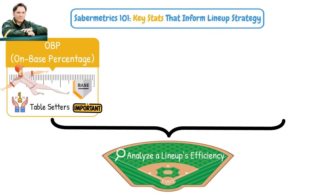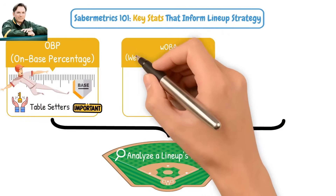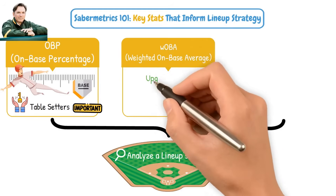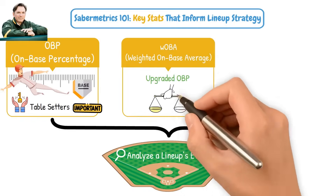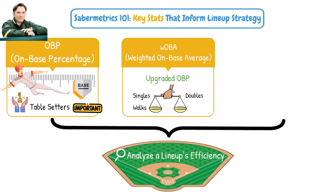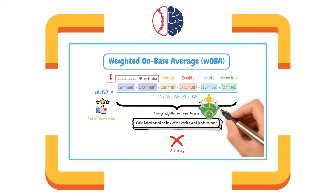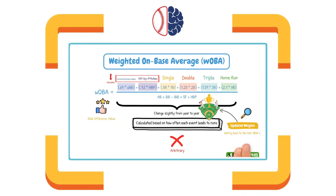Then we can utilize a stat like wOBA. Think of it as an upgraded OBP. It gives proper weights to walks, singles, doubles, and home runs. And if you're unfamiliar with this stat, check out our video on that subject on screen now.